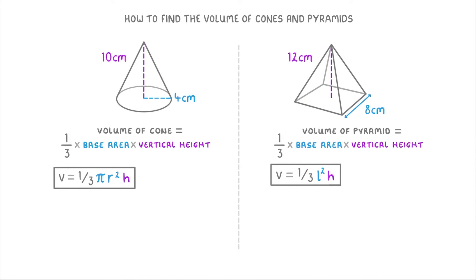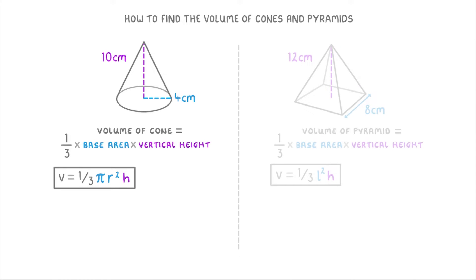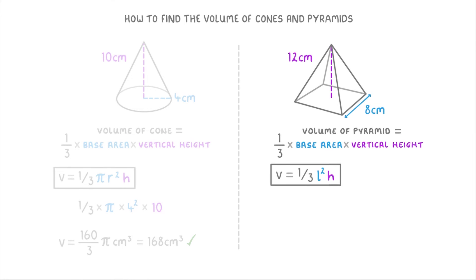To see how these equations work, let's add some measurements to our shapes and work out their volumes. Starting with the cone, we do one third times π times our radius squared — so times 4 squared — then times the vertical height of 10. This gives us a volume of 160/3 π cm³, or 168 cm³ to three significant figures. Then for the square-based pyramid, we do one third times 8 squared times the vertical height of 12, giving a volume of 256 cm³.